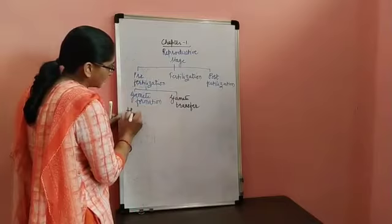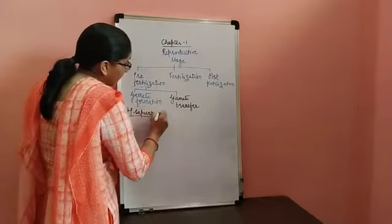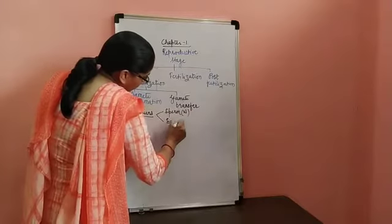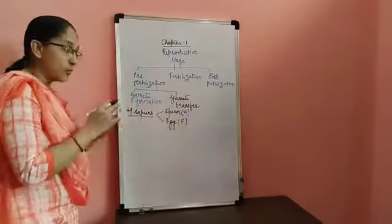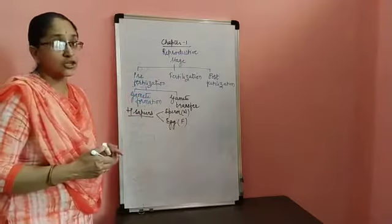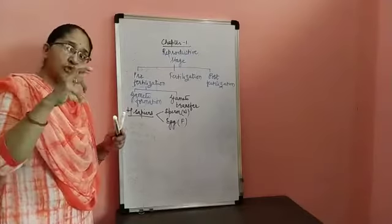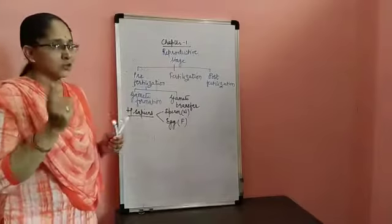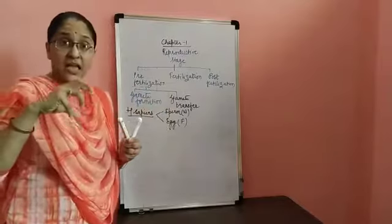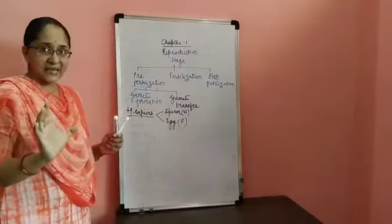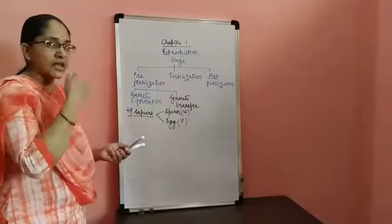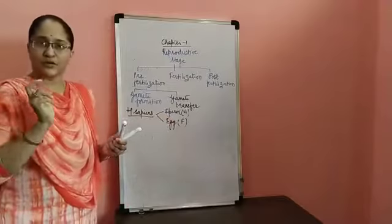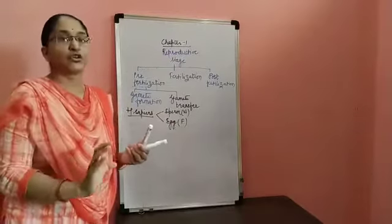Gametogenesis means the process of formation of the male gamete and the female gamete. In case of Homo sapiens, the male gamete is the sperm and the female gamete is the egg. The sperm mother cell will undergo spermatogenesis — it is diploid, that is 2N — it will undergo meiosis and produce haploid sperm. Similarly, the egg mother cell will undergo meiosis and produce haploid eggs. These haploid — N — sperm and haploid egg will fuse to form the zygote, which is diploid. The process of sperm formation is referred to as spermatogenesis and the formation of the mature egg is referred to as oogenesis.